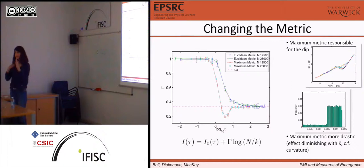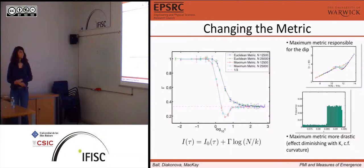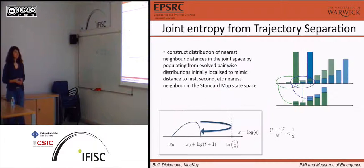But in the standard map there's a lot of curvature that sets in with increasing K. For example, if K equals zero there is no curvature at all, so there is a really pronounced dip. This isn't the best way of looking at the standard map. You can actually explain away some features just by using one metric or the other.